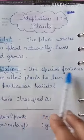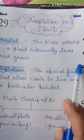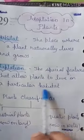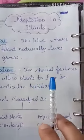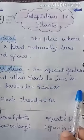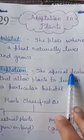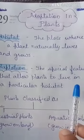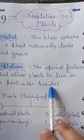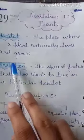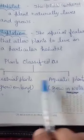Adaptation refers to the special features that allow plants to live in a particular habitat. Those special features jinkay wajah se koi bhi plant apne habitat mein survive kar pata hai, usay hum adaptation kehte hain. For example, a cactus can survive in a desert, but a mango tree cannot, because it lacks those special features. These special features that help a plant survive in its habitat are called adaptations.